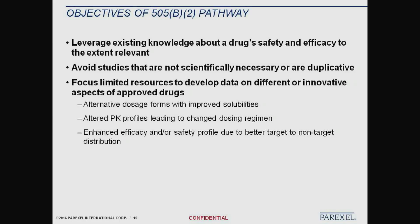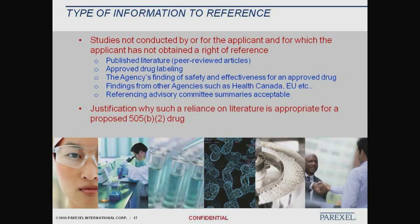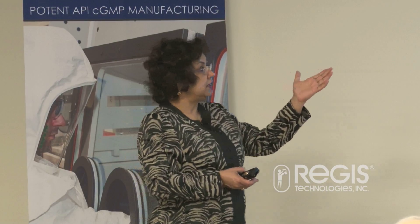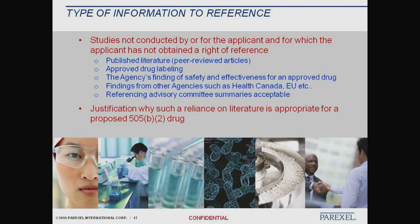Alternative dosage forms, altered PK profile, enhanced efficacy or safety due to better target or non-target tissue distribution. What are the sources of information? Published literature, peer-reviewed articles, approved drug labeling, agency findings of safety and effectiveness of an approved drug, and findings from other agencies. This is very critical because a lot of these drugs are already in Europe — people come and say 'we already have this drug in Europe, how do I bring it here?' It can be leveraged very well. Referencing advisory committee summaries is also acceptable.